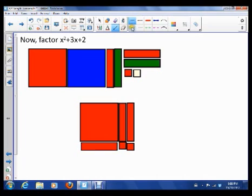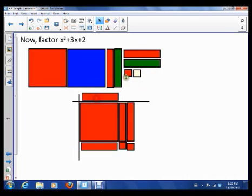So now you can see that my factors, or the things that were multiplied to make that x squared plus 3x plus 2, are actually just an x plus 2 and an x plus 1.